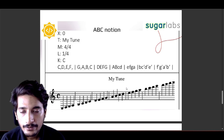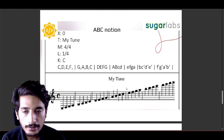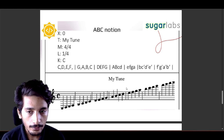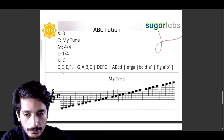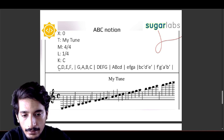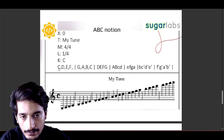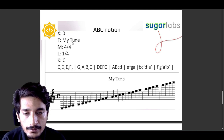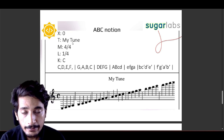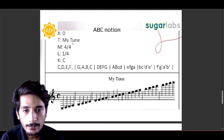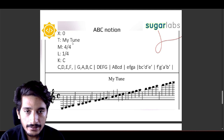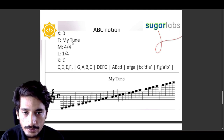Here we have ABC notation. In ABC notation, X represents the reference number, T represents the title of the song, M represents the time signature, L represents the default length of the note which is a quarter note, and K represents the key of the song — in this case the key of C — followed by the notes. You can see we are going up and down the scale of C. This whole thing is in a very compressed format, which helps in conversion of ABC notation to music blocks. In MIDI, that would be a very long sequence, and for repetition, ABC notation has repeat notation whereas MIDI does not, making MIDI sequences even lengthier.